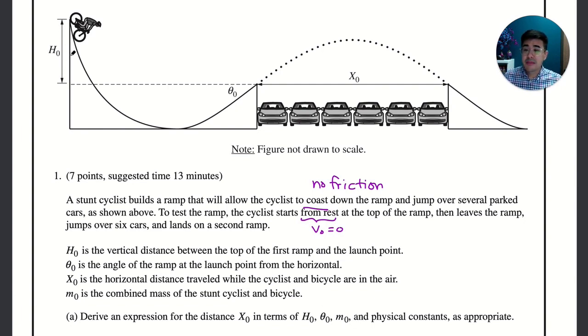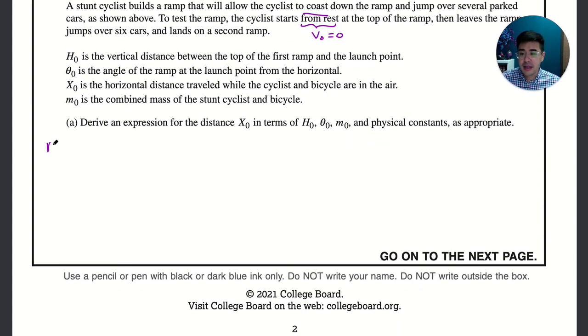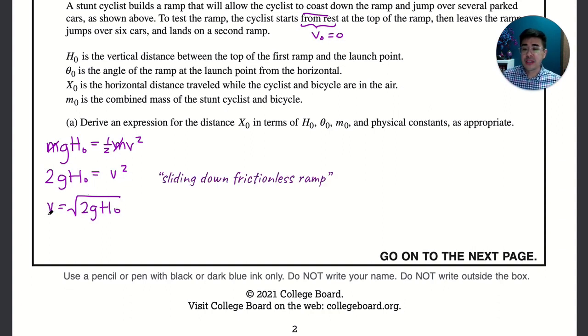Anytime I see something changing height I'm gonna do conservation of energy. He starts off with potential energy and it's going to be converted into kinetic energy, so let's do that. We have mgh naught equals one half mv squared, then the m's cancel out, so we get 2gh equals v squared. So the velocity when the cyclist reaches the end of the ramp will be this, and y'all should know this one. This is a pretty common formula that you need to know on a frictionless ramp or something that's sliding down a ramp or changing height, even free fall without friction or air resistance.